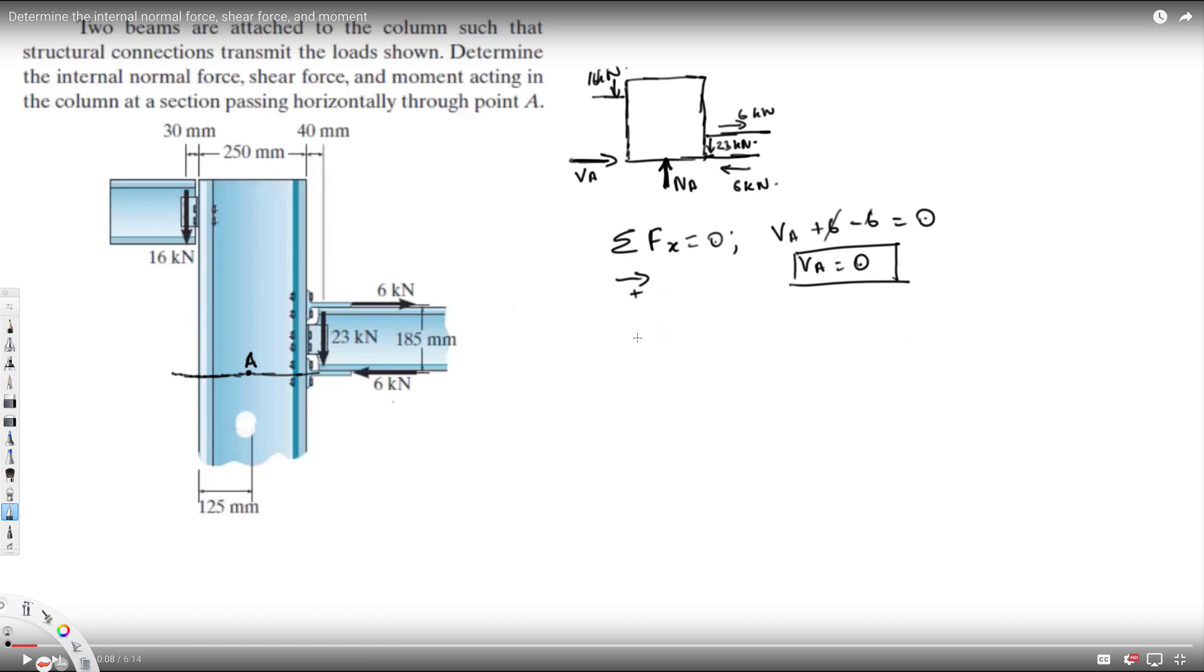Now let's see what we can find from summation of Fy equal to zero. If I take upward direction positive, Na is going to be positive minus 16 minus 23, so it comes out to be Na equal to 39 kilonewtons. Since this is positive, our assumption is right - this is acting upside.